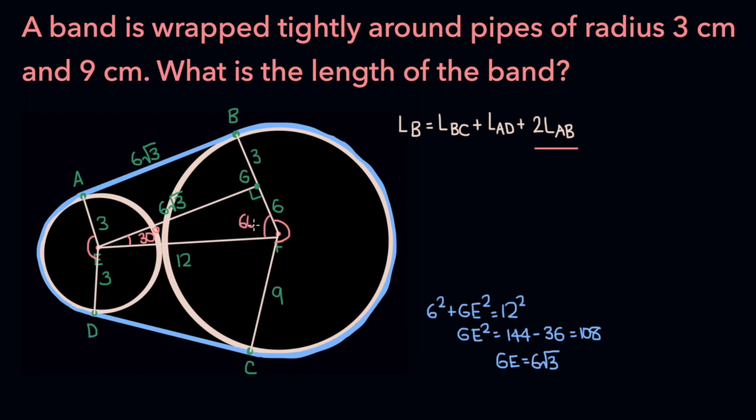The third angle of the triangle then must be 60 degrees for the three angles to sum up to 180. Now if this angle is 60 degrees, then this angle must be 60 degrees as well. And if the total angle here is 360, then the angle of arc BC must be 240. 360 minus 60 minus 60.